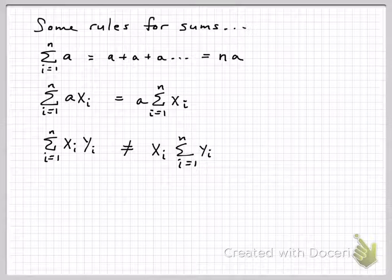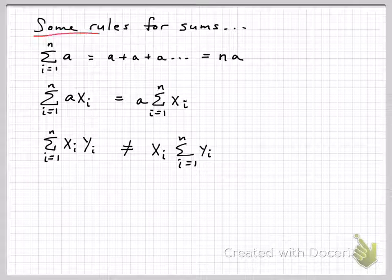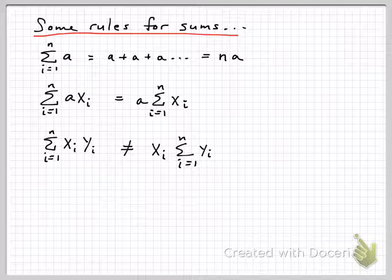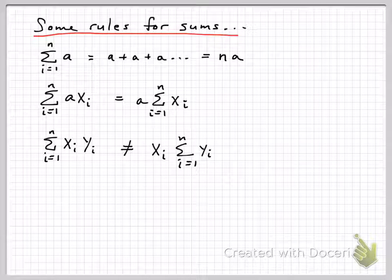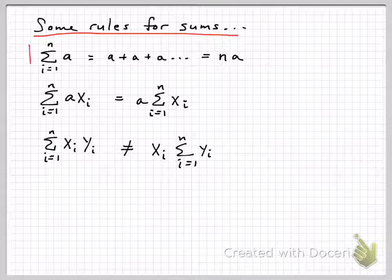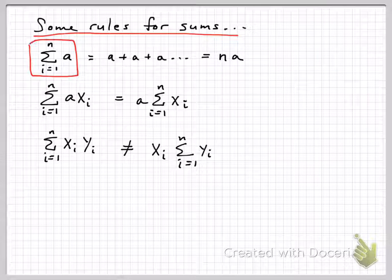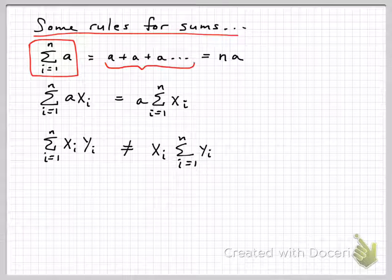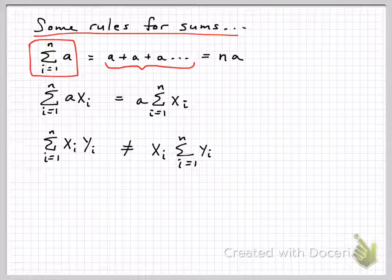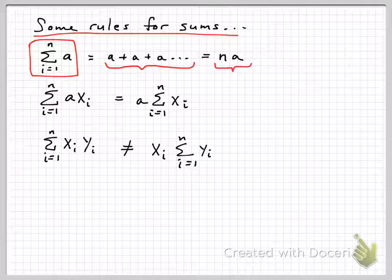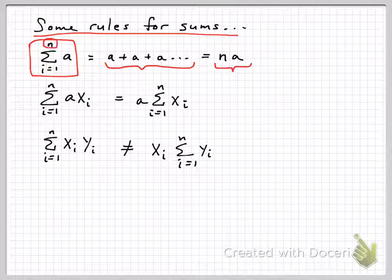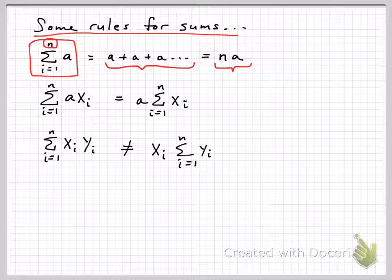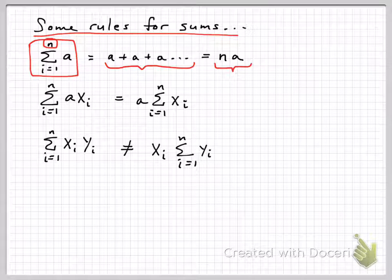There are some rules to keep in mind about sums. So there's certain things you can do and certain things you can't do. So one thing to note is if you have a constant like some number a, say 4, and we add it up over n different observations of 4, then we're going to get a plus a plus a, 4 plus 4 plus 4, n times, right? So that's going to end up being n times a. So you need to make note of what is the n up there at the top. That's how many there are. And we add up that many a's and we have n times a. Simple rule.